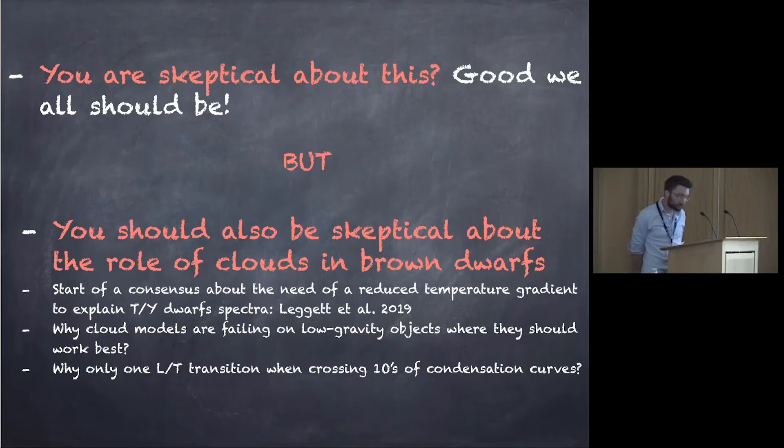And still the main problem also for cloud models that they do not reproduce very well low gravity objects where they're supposed to work best because they're supposed to be the one with the highest amount of clouds. The main point is that we have only one L-T transition when we're crossing tens of condensation curves. Why only one and not an L-T transition for each of the condensation curves we cross? So I think it's probably really important now that we revisit what we think we know about clouds in brown dwarf so that we get that right. Thank you.